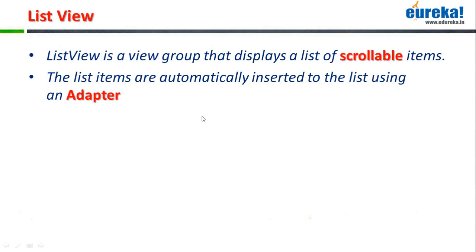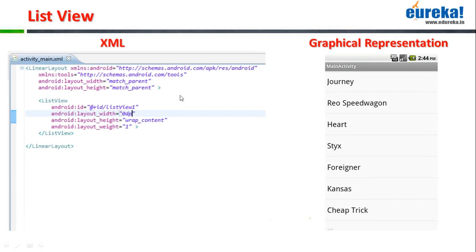Now let's move forward. Another very commonly used layout in Android is the ListView. A ListView is a view group that displays a list of scrollable items. The list items are automatically inserted into the list using an adapter, similar to how we used an adapter with the GridView, which I just showed you. Let's take a look at an example.